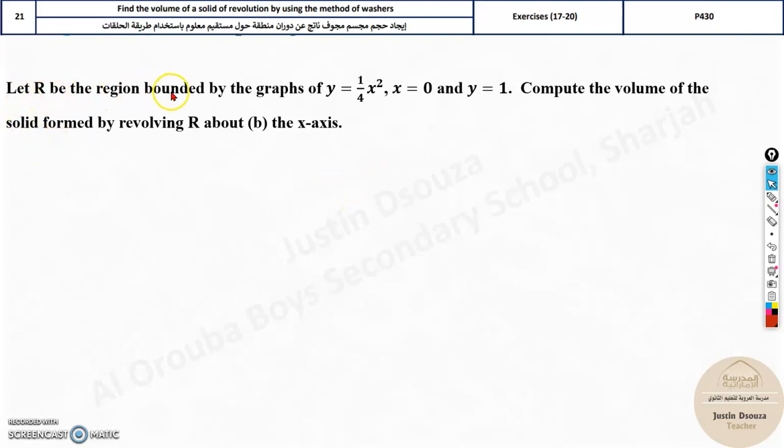let the region R be bounded by the graphs y equals 1/4th x squared. Now, 1/4th x squared means it's a parabola, quarter of it. 1/4th is the coefficient of x squared. So that doesn't matter much, but we know it's a parabola, something like this, since it's positive.